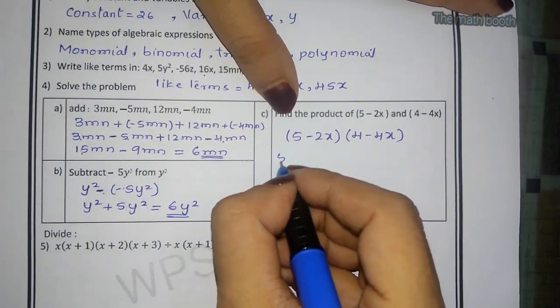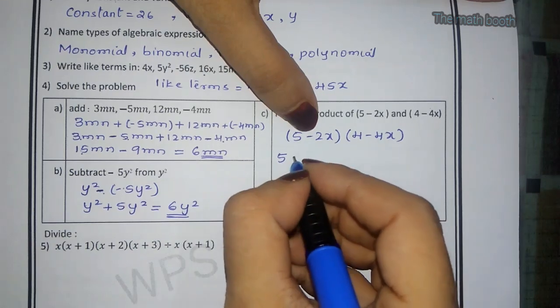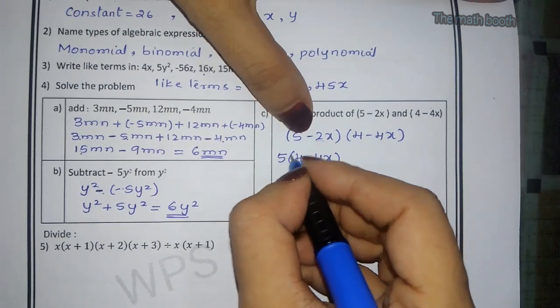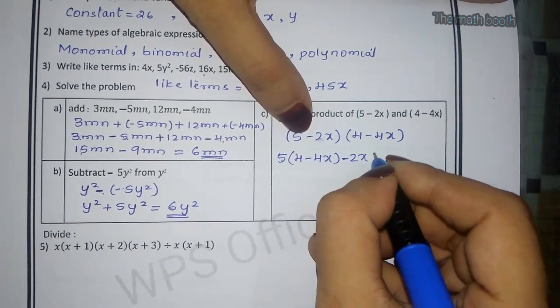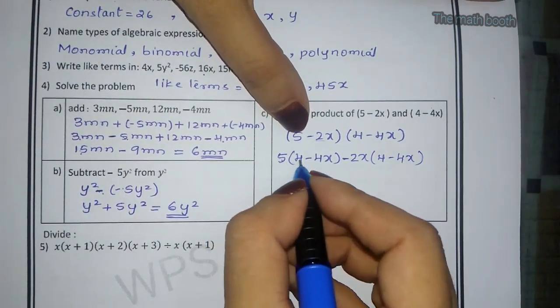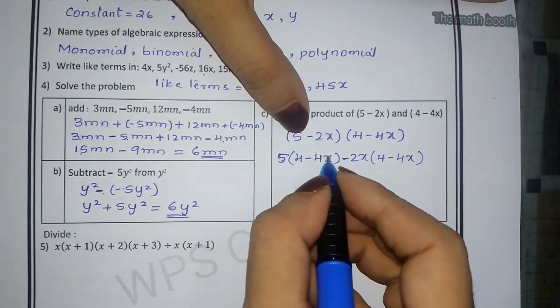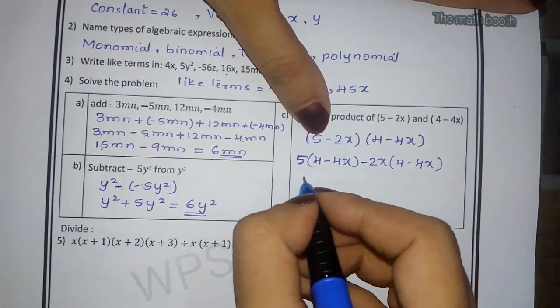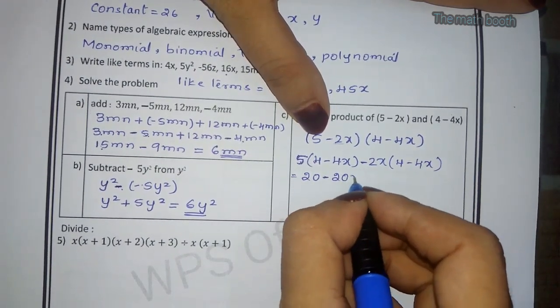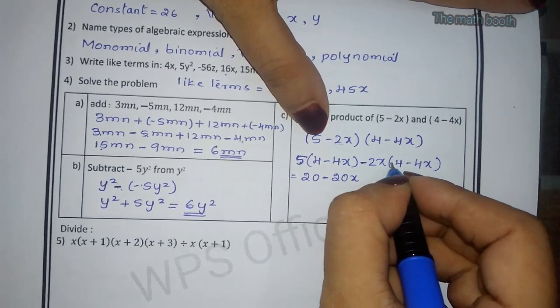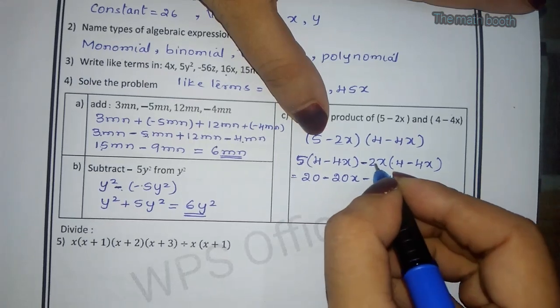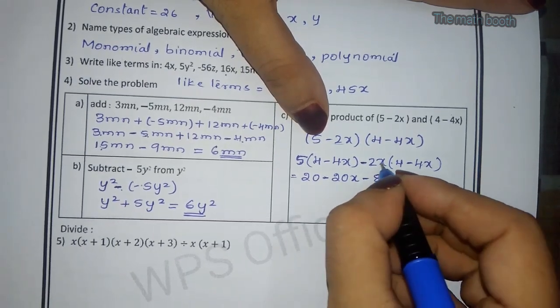5 I will take from this bracket and I will write this bracket as it is: 4 minus 4x. Then what remains, minus 2x remains, so 4 minus 4x. Now we will multiply outside number with first number, then outside number with second number. 5 times 4 is 20, minus 5 times 4 is 20x. Now minus 2 times 4 is 8x, minus minus is plus, 2 times x is 8x square.